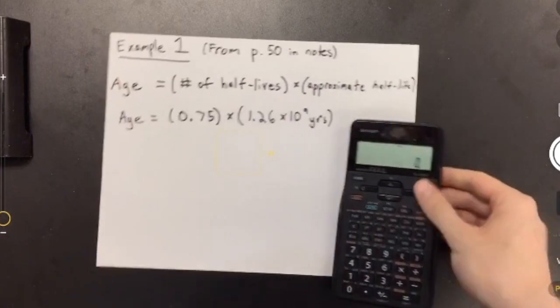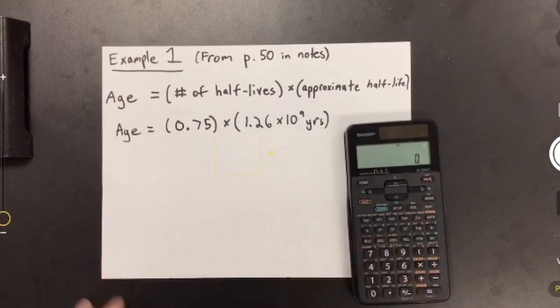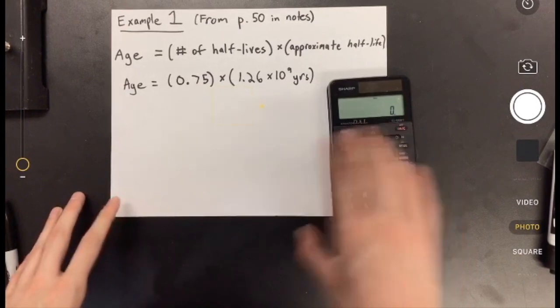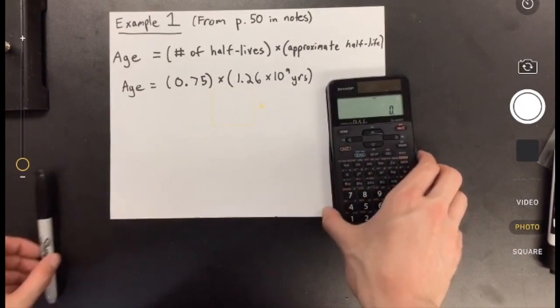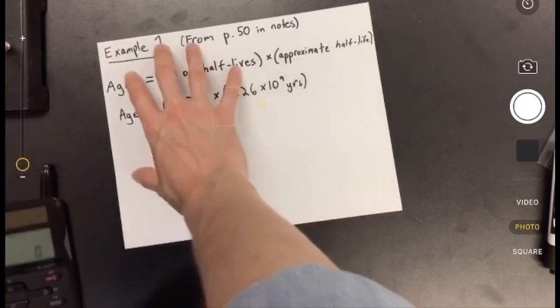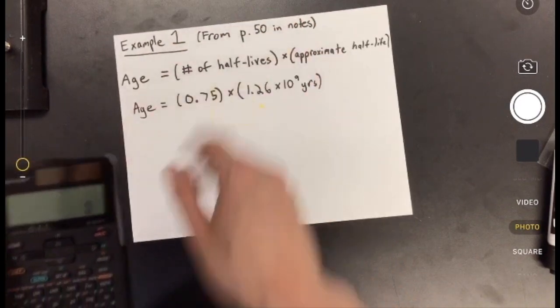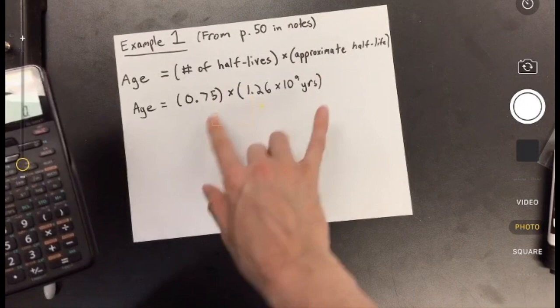Okay, so as promised, just a quick video going through how to enter this stuff on a calculator, because I know some of this stuff is kind of new in terms of entering on a calculator. So I'm just going to show you using the exact same example from page 50 in the notes, the one we did in the video lesson. How would you enter this?